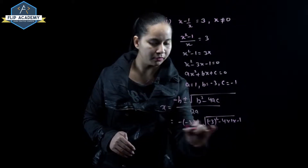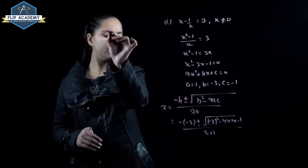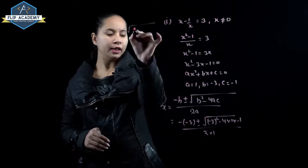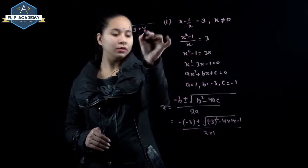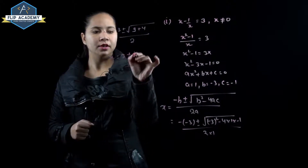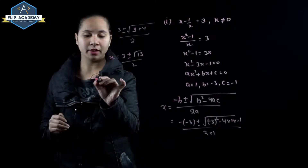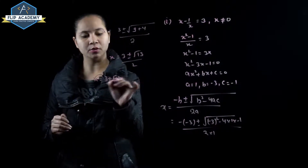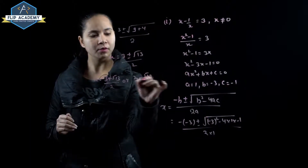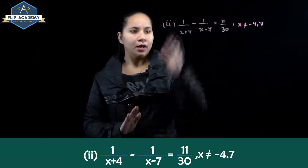Substituting: x equals minus of minus 3, plus or minus square root of minus 3 whole squared minus 4 times 1 times minus 1, upon 2 times 1. This gives x equals 3 plus or minus square root of 9 plus 4 upon 2, so x equals 3 plus or minus under root 13 upon 2. The two roots are x equals 3 plus under root 13 upon 2, or 3 minus under root 13 upon 2. First part is complete.